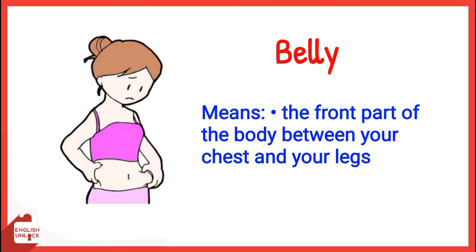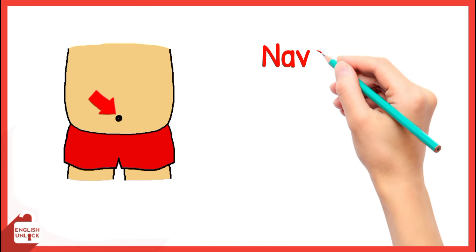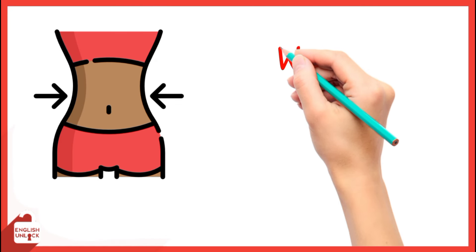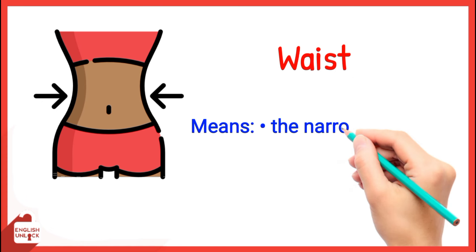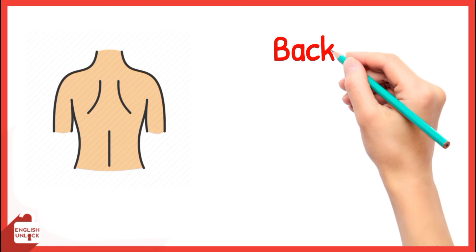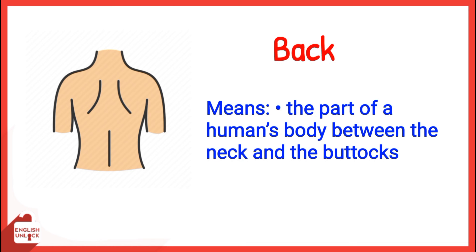Belly means the front part of the body between your chest and your legs. Navel means the small hole or lump in the middle of your belly. Waist means the narrowest part around the middle of the body.